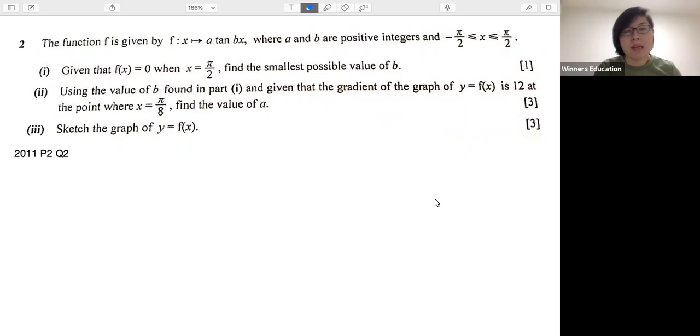It's actually from 2011, paper 2, question 2. So let us take a look at this question. We are given this function f(x) equals a tan(bx), where a and b are positive integers. And we are given that x is between negative π/2 to π/2.